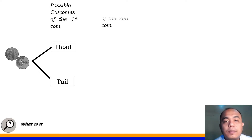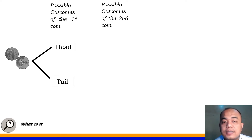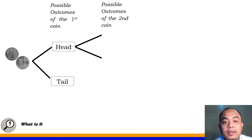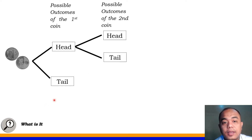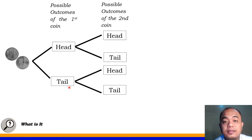Now, this is the possible outcomes naman for the second coin. Sa isang coin, pwede yung head — pwede ang kaparis niya ay dalawa. May head at saka tail. May possibility kasi yan. Yung head ng isang coin, pwede ang isang coin naman may head at saka tail na pwedeng outcome or pwedeng lumabas in tossing the coin. Sa tail naman ng isang coin, pwede ang paris niya ay head at saka tail.